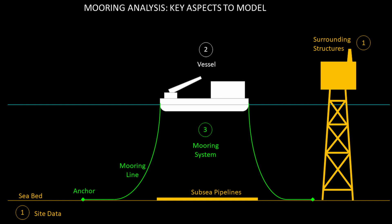The fourth key aspect is the environment. Modeling the environment means defining the wind, wave, and currents that are to be applied onto the vessel and the mooring system. We generally define various combination of wind, wave, and currents as various cases. For each of the defined cases, the mooring analysis is performed and results are obtained.